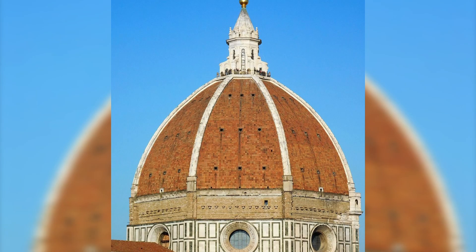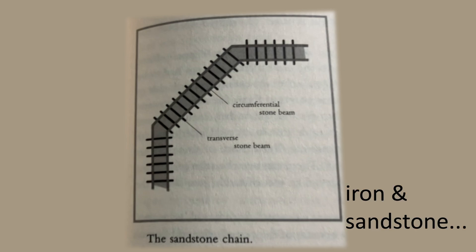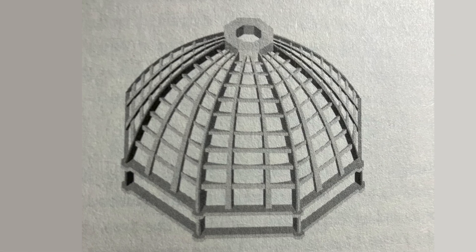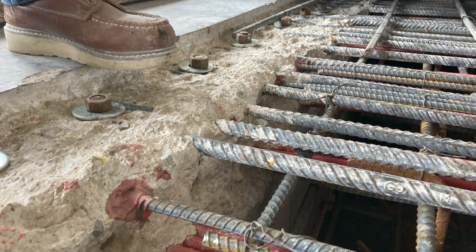Which is why the Santa Maria del Fiore in Florence, Italy, used iron chains which resist tension, at least a lot better than brick, and were embedded within the dome around the lower latitude lines, using metal as a tension reinforcing, much like rebar in modern concrete.